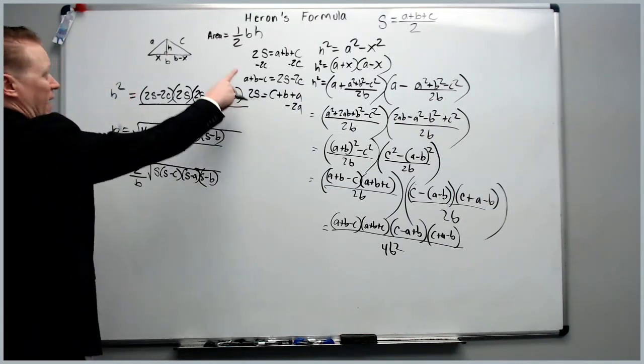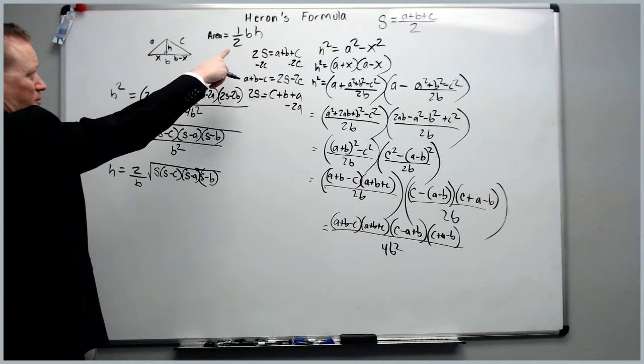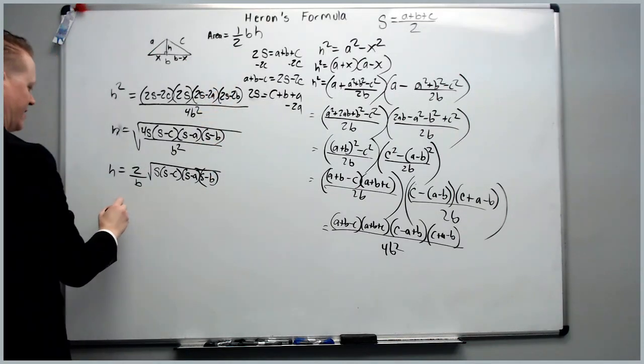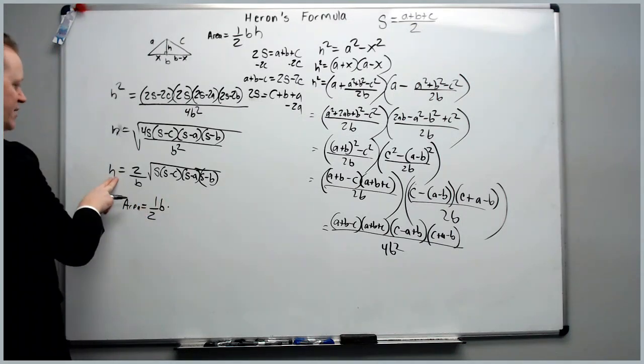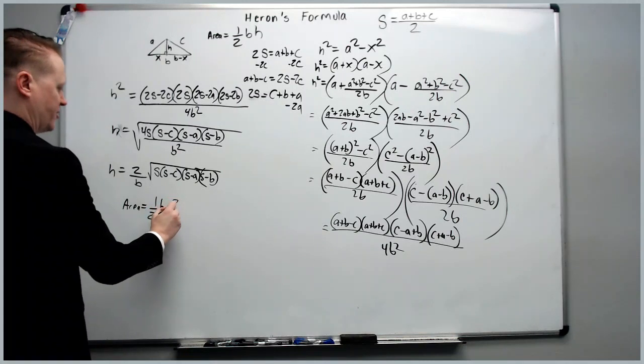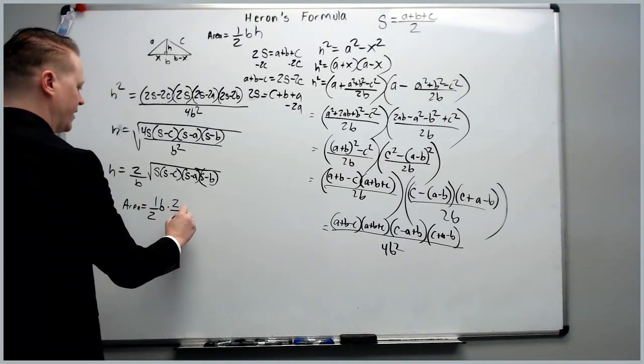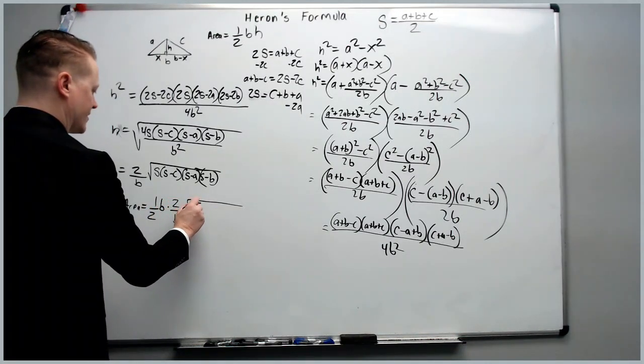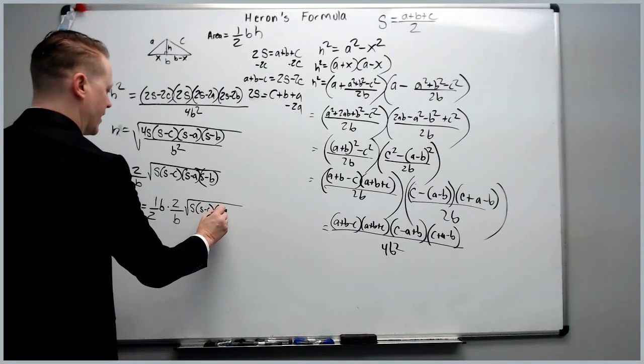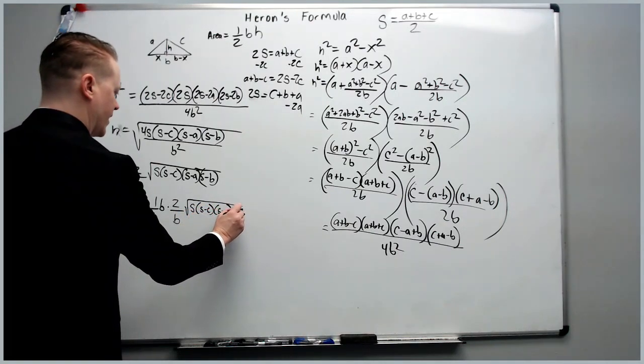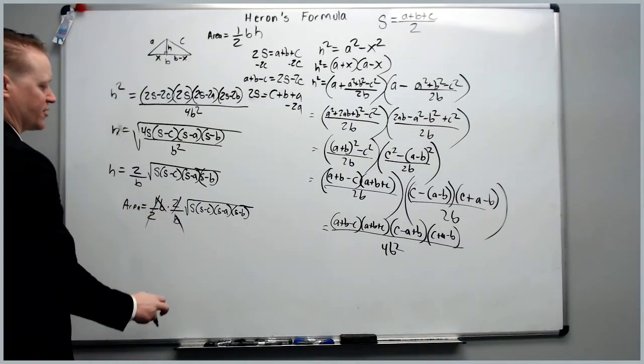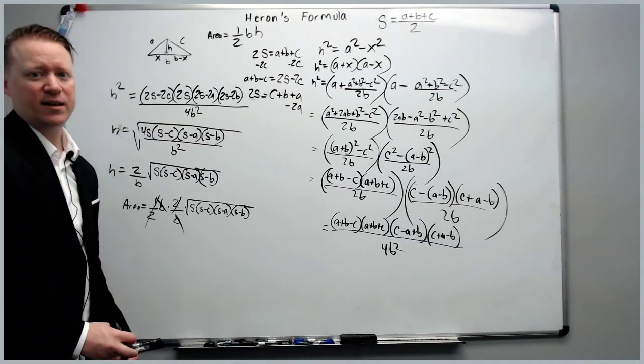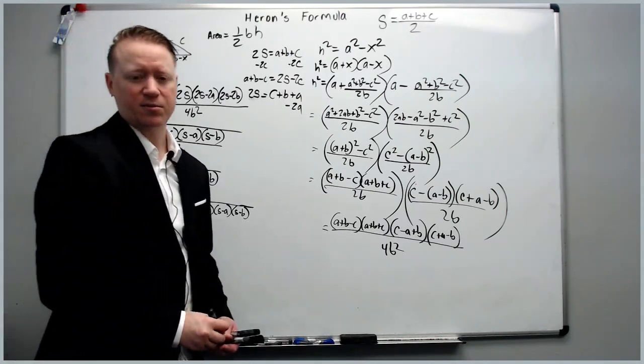We will then come back to our area formula, where area is half B times the height, and our area will now equal one half times the base times the expression for H that we just found, which is 2 over B square root of S times S minus C, S minus A, S minus B. The half and the two will cancel, the B's will cancel, and there is Heron's formula. In a second we'll be right back and do some examples.